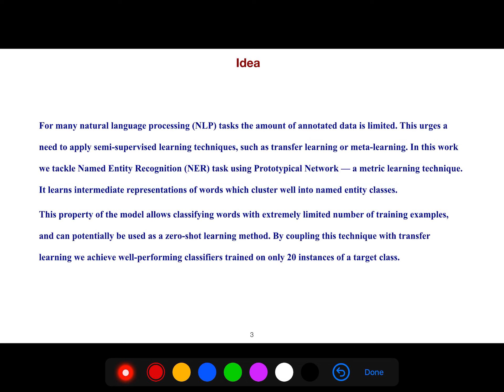For many natural language processing tasks the amount of annotated data is limited. This urges a need to apply semi-supervised learning techniques such as transfer learning or meta-learning. In this work they tackle named entity recognition tasks using prototypical networks, a metric learning technique. It learns intermediate representations which cluster well into named entity classes.